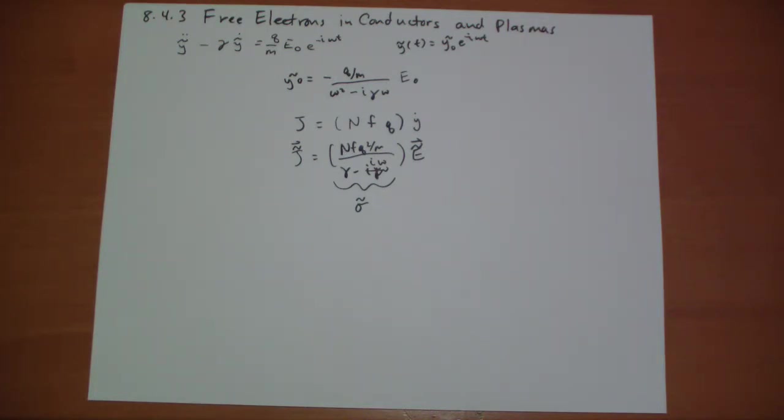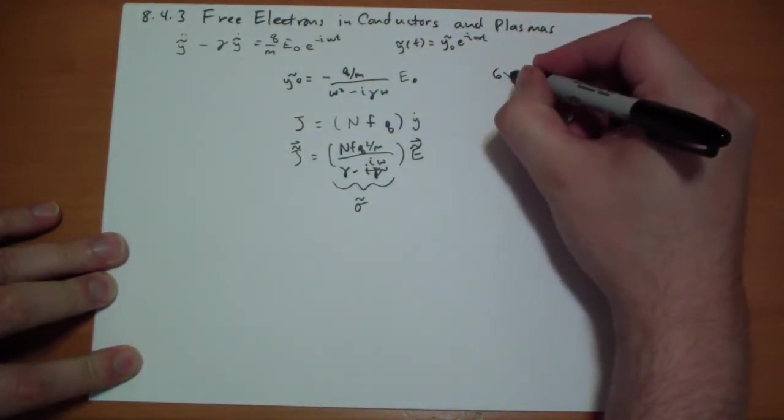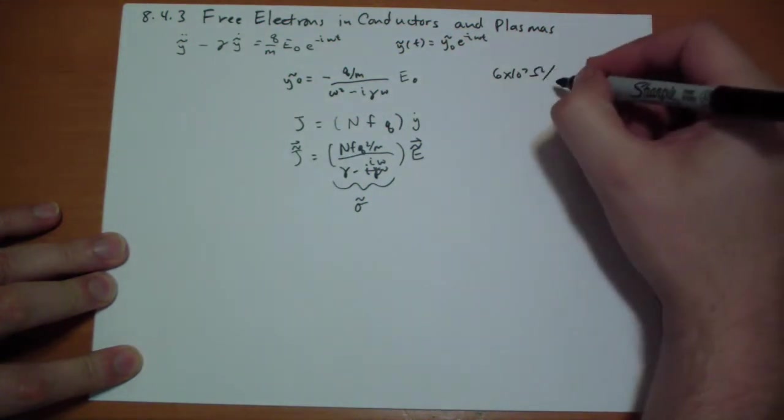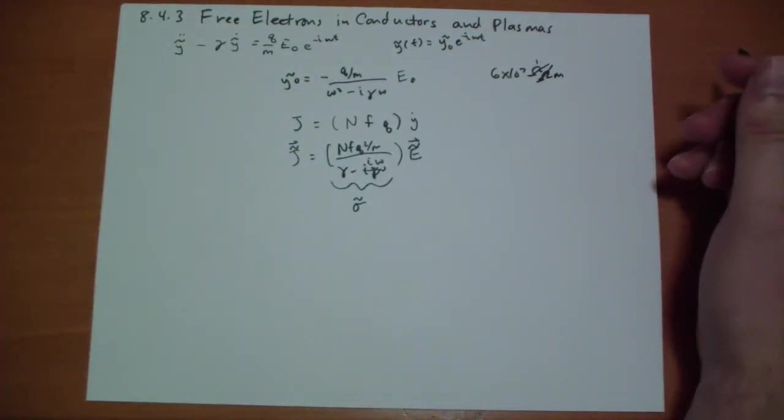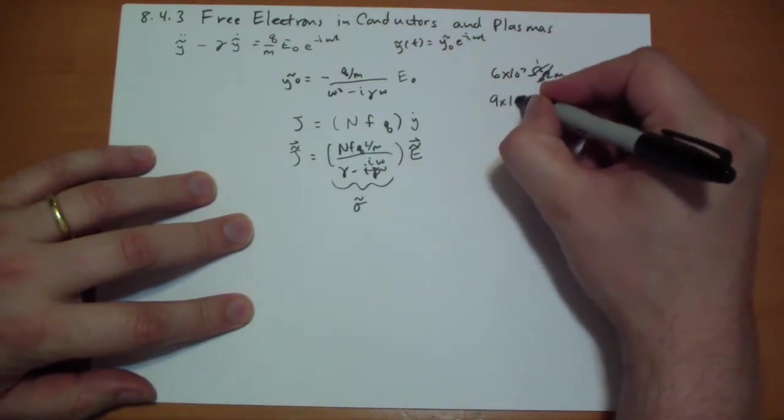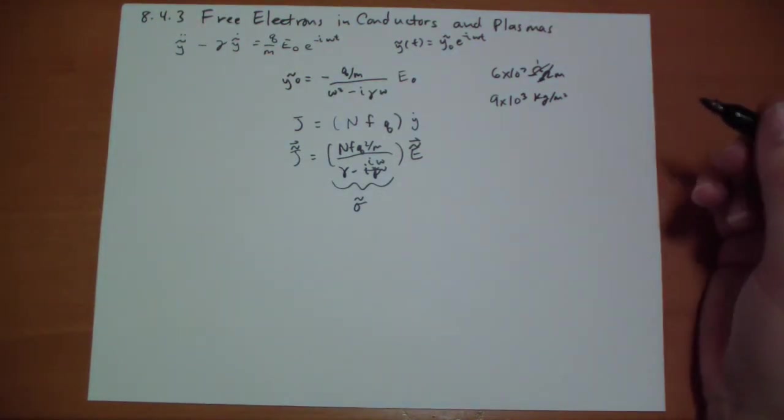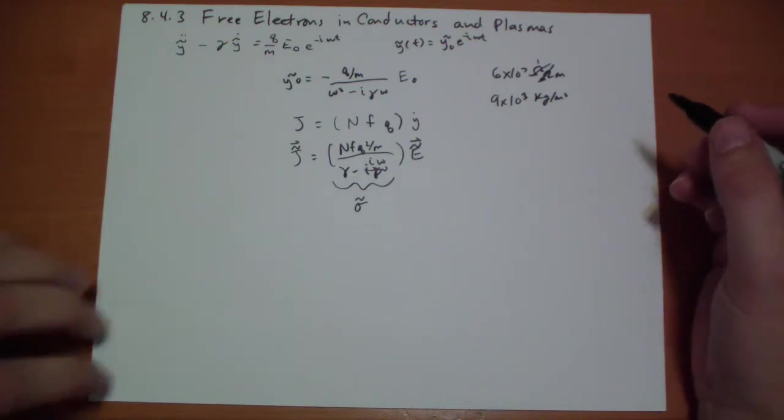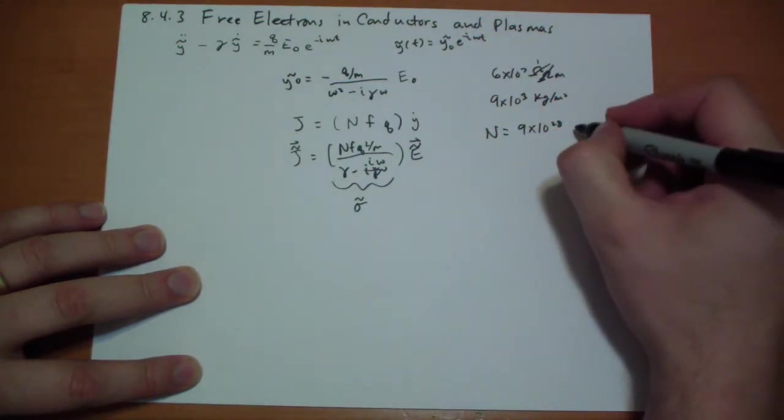Example eight. So let's calculate what happens when we subject copper to a high frequency. Copper has its conductivity at low frequencies is about six times ten to the seventh one over ohmmeters. Its density is about nine times ten to the third kilograms per meter cubed. And it has one free electron per atom. So our n, the number of atoms that we're talking about here, is nine times ten to the twenty-eight per meter cubed.